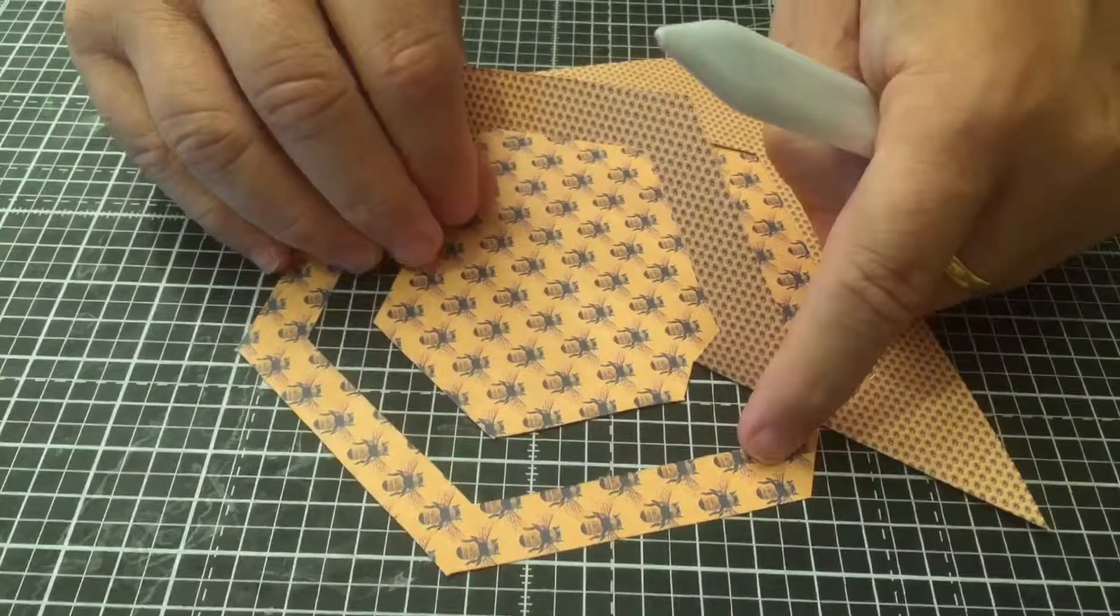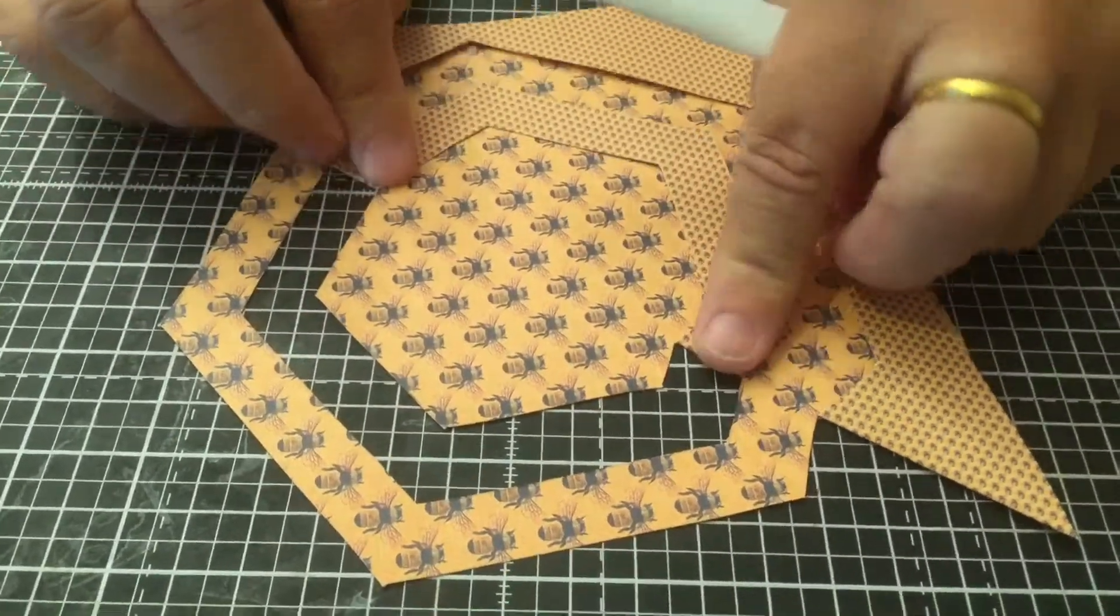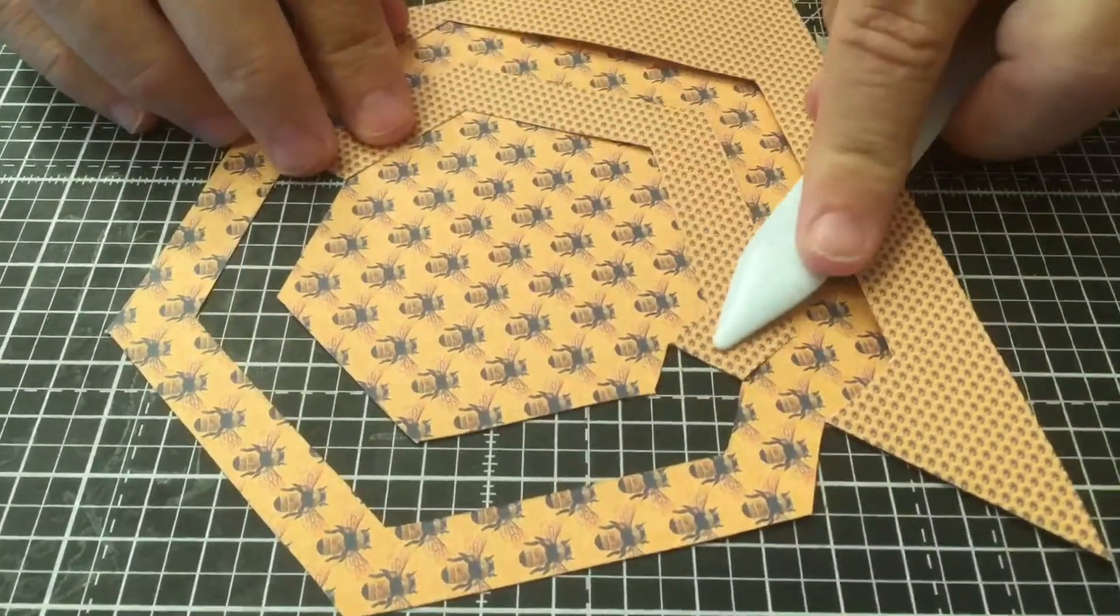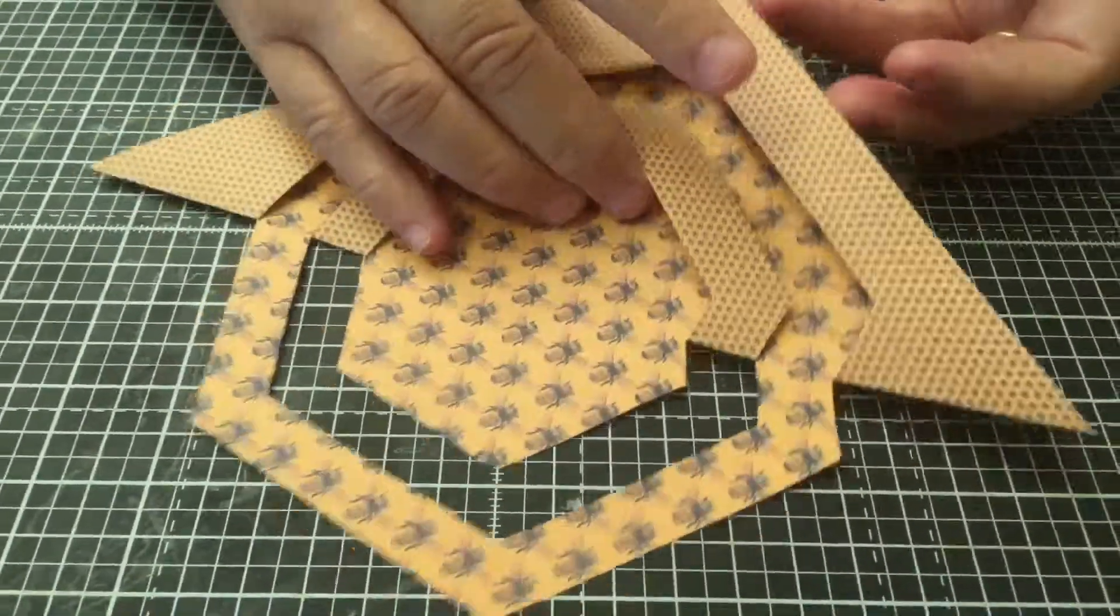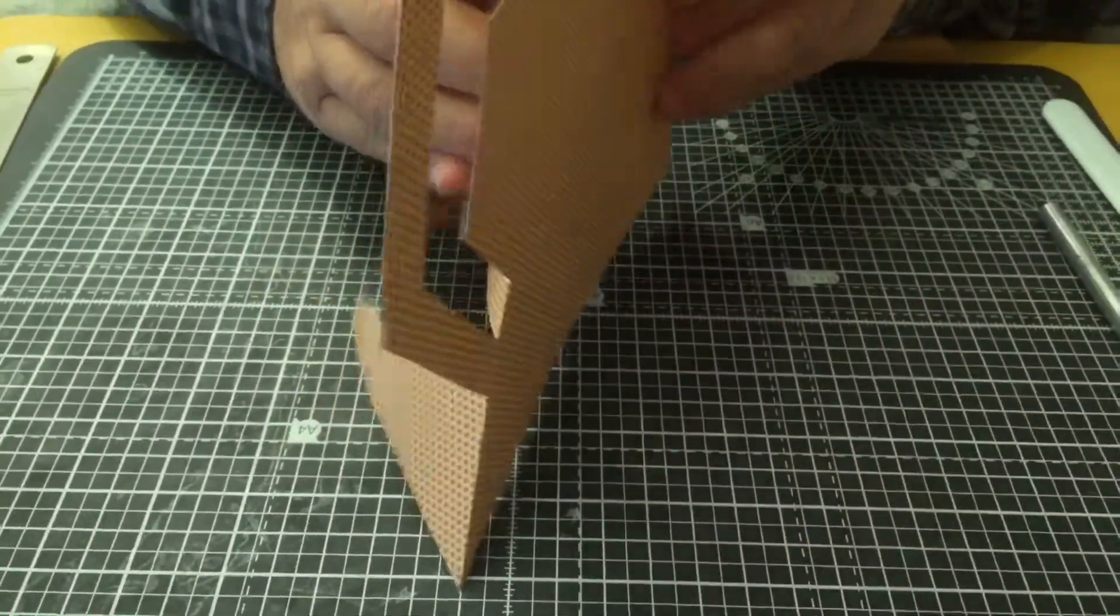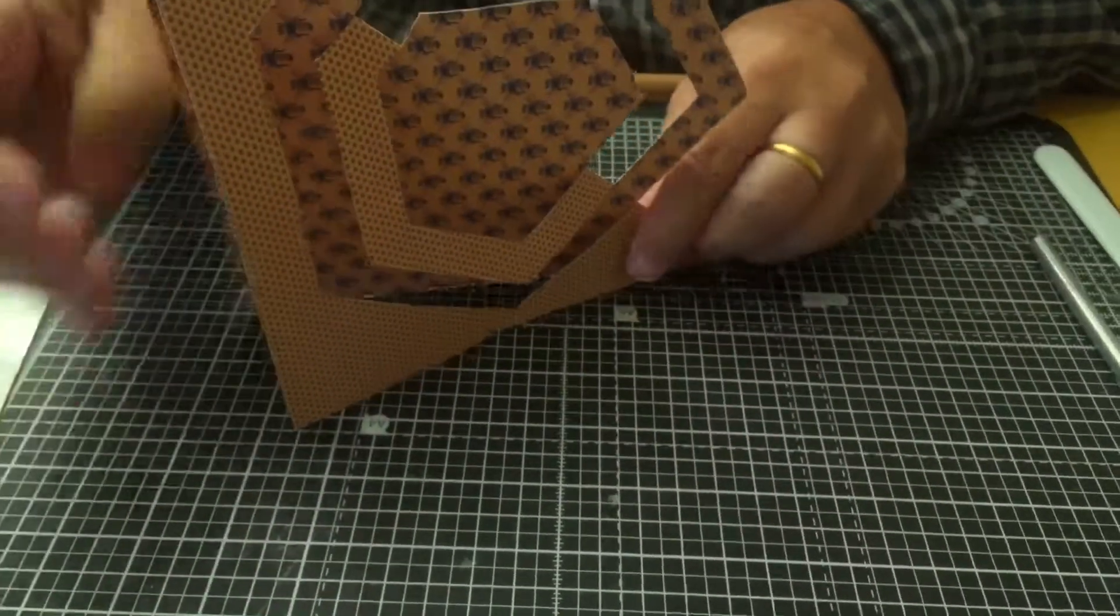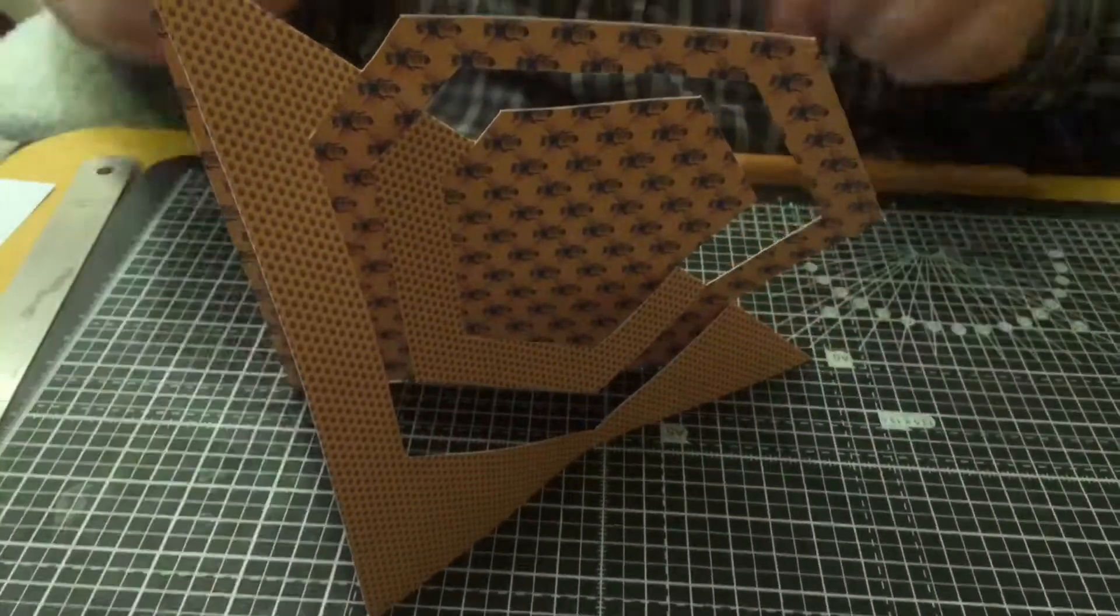Then you leave the next section, take the section in between, and you can crease that. You end up with a card which is free-standing and you can decorate any way that you want.